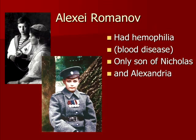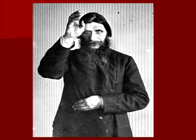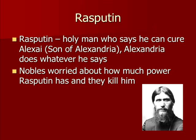Enter Rasputin — a holy man who came along and convinced Alexandria that he could save Alexei. Because she believed he could cure Alexei, Alexandria pretty much did whatever he said. In doing this, she started giving him more and more power, doing what he said and letting him run things.